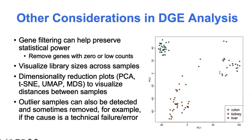I just want to mention some useful practices that are often built into many of these differential gene expression packages, but you can also do these pretty easily on your own if they're not already built in. One of these steps is to do some gene filtering, which can be useful because it reduces the number of tests we need to conduct. Generally, we want to remove genes that we don't expect to be differentially expressed — those are usually genes with zero or very low counts.